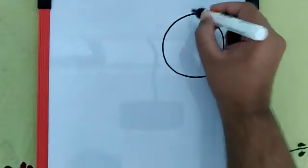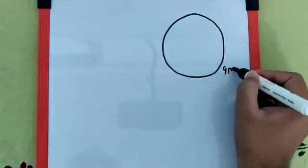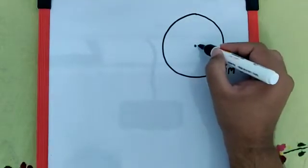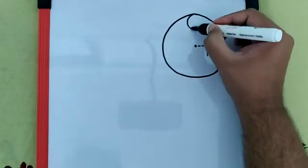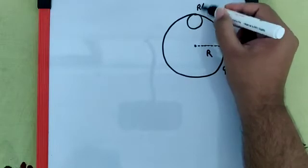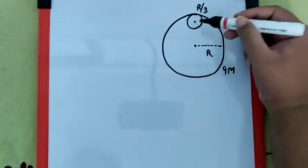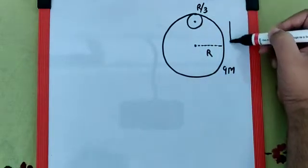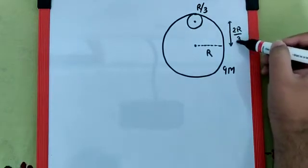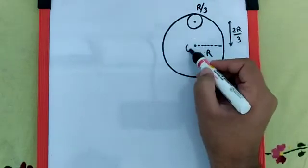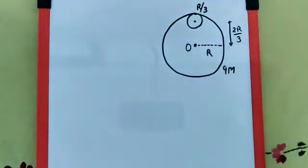Now, the diagram given in the question is something like this. This is the original disk with mass 9m and radius r. There is a smaller disk for which the radius is r/3. The distance of the center of the disk from the original disk is 2r/3. And this is the point O about which the moment of inertia is asked.